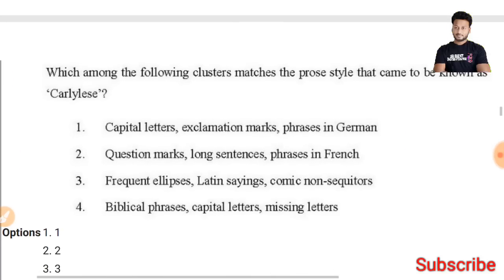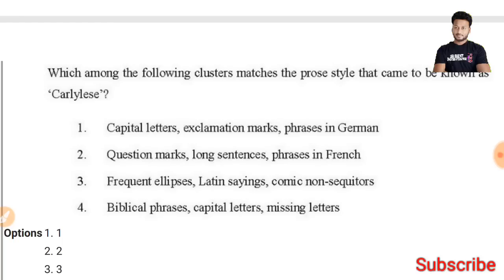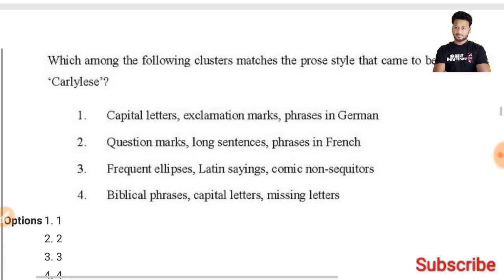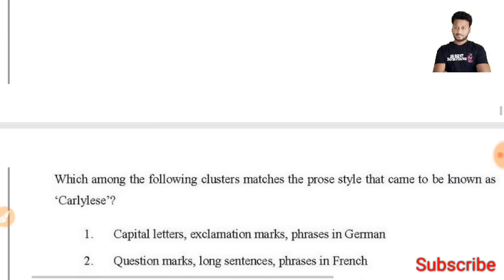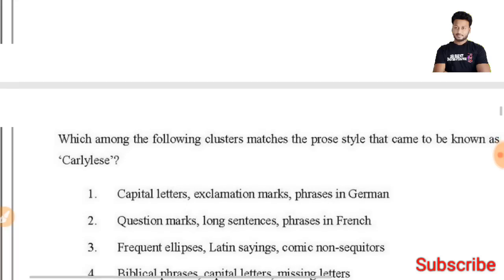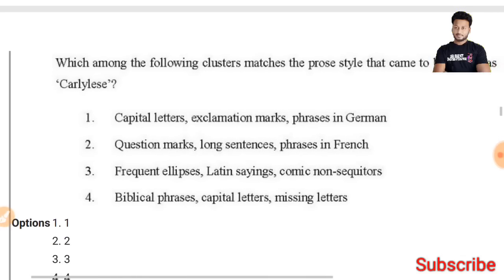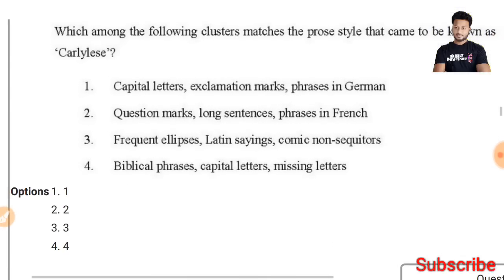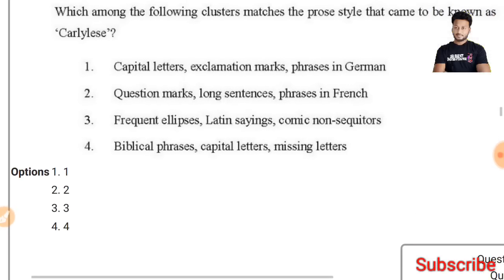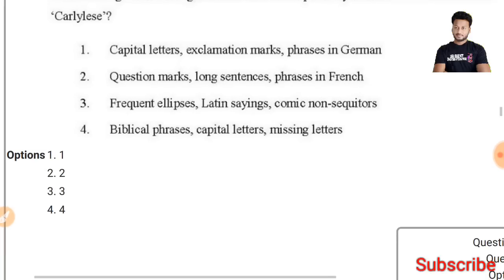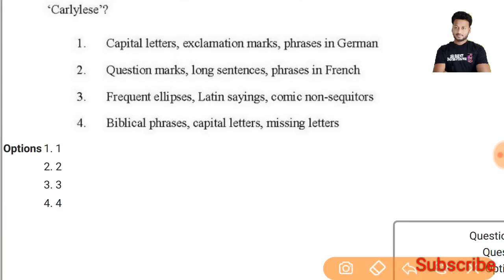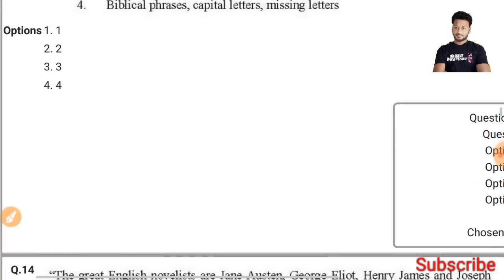Question 13: Which among the following clusters matches the prose style that came to be known as Carlylese? I am a little bit confused about this answer, but I think the right answer will be the second option — long sentences and phrases in French. This may be the right answer.